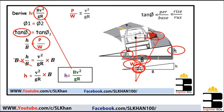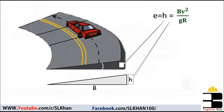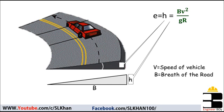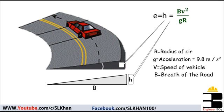In that formula, b is the breadth of the road or railway line, v is the speed of the vehicle, g is the acceleration due to gravity equals 9.8 meters per second squared, and r equals the radius of the curve.